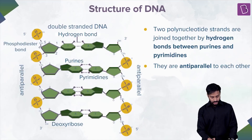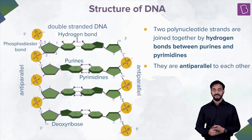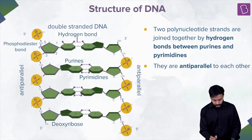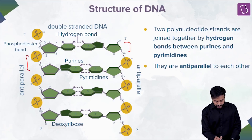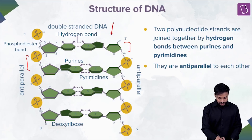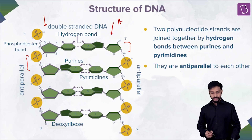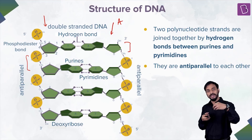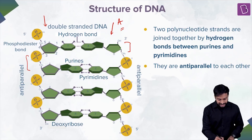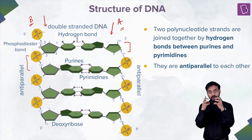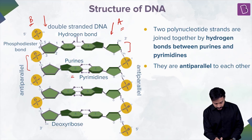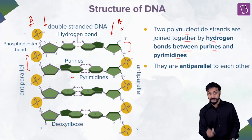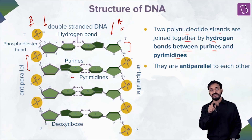Let's look at the structure of DNA and how it forms a double-stranded structure. There are two strands — strand A and strand B. Each strand is formed by joining nucleotides in a chain. Chain A and chain B interact with each other through hydrogen bonds. Purines and pyrimidines form hydrogen bonds with each other — two polynucleotide strands joined together by hydrogen bonds between purines and pyrimidines.